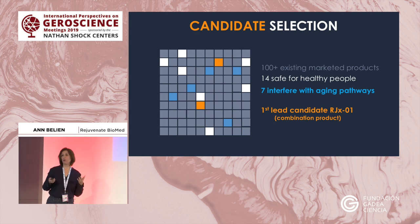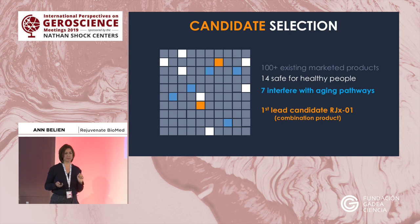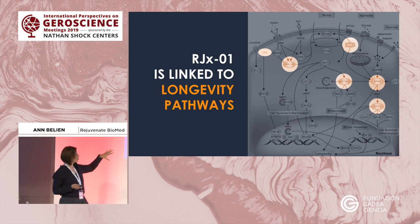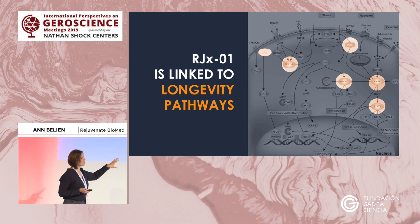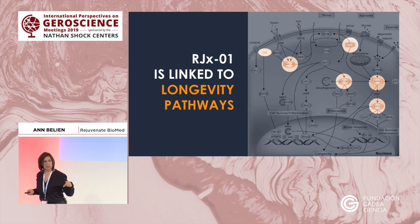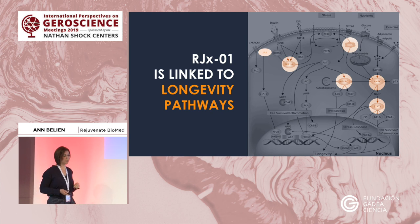We call our compound RGX01. We cannot reveal the name of the combination product yet, but that will be done very soon. We know that we can influence multiple pathways. Bringing it back to the hallmarks of aging, our main activities are in mitochondrial dysfunction, nutrient sensing, and proteostasis. We did not take this as a selection criteria — that's just how it turned out. Taking a completely different approach brings you back to what we've learned from basic science, and that's what we like about this reverse translation approach.